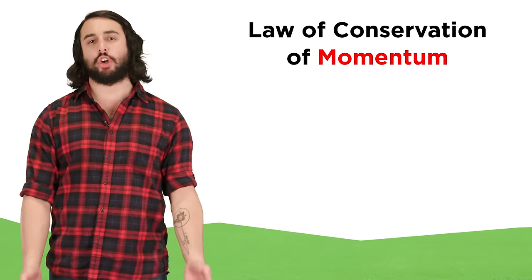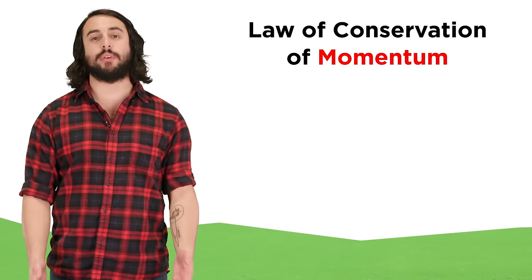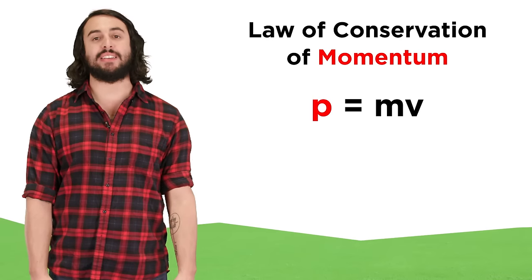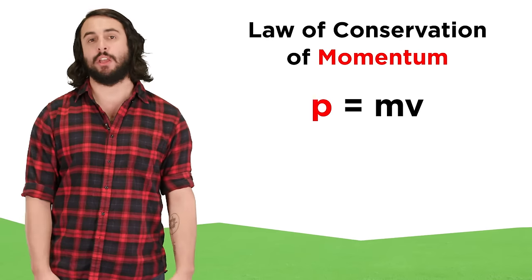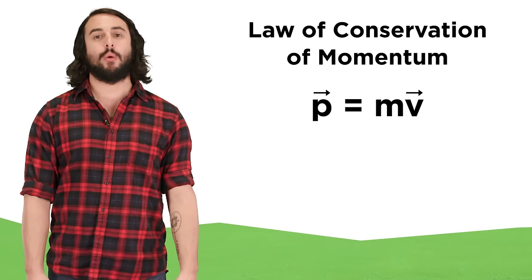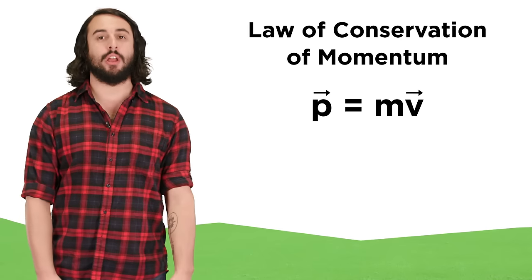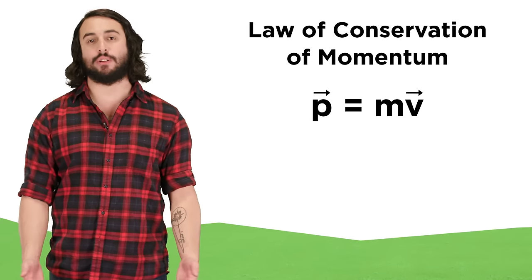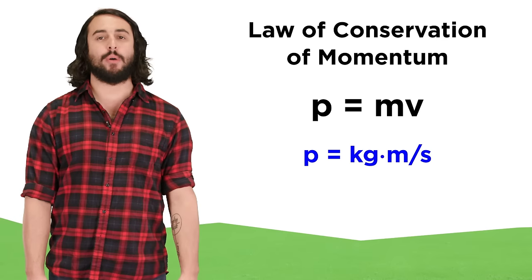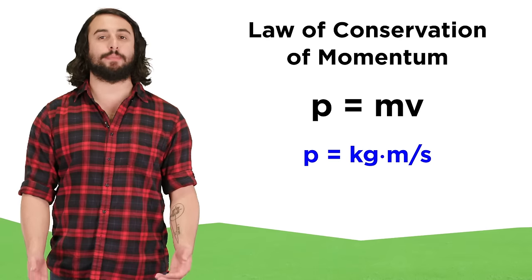Momentum is a term we may be familiar with, but once again we must learn the rigorous definitions of these words. Linear momentum is defined as mass times velocity, which will be represented by the letter P. Momentum is a vector quantity, as it involves a velocity vector being multiplied by the scalar value of the object's mass. This means momentum will be expressed with SI units of kilogram meters per second.